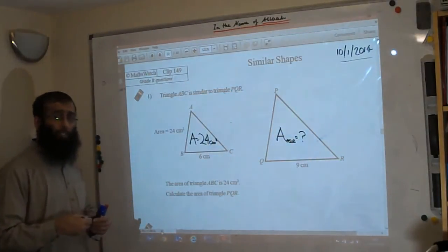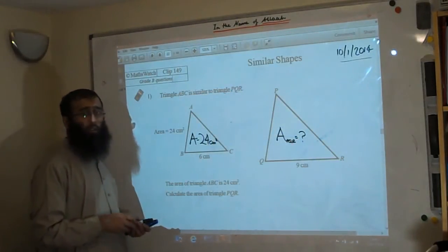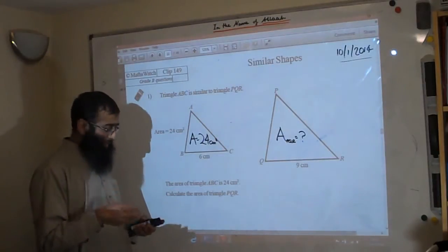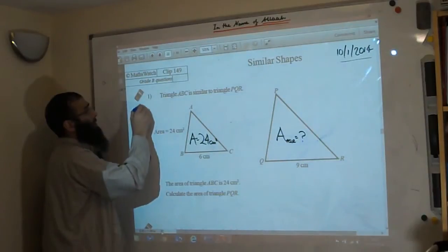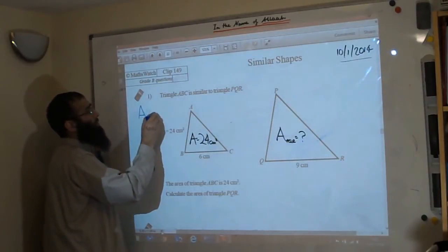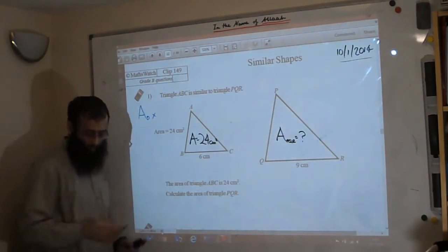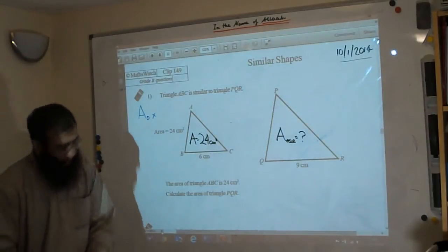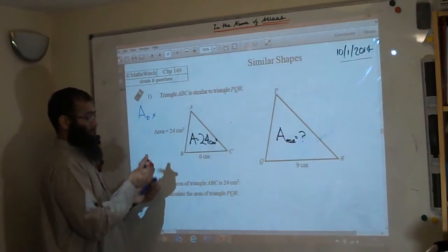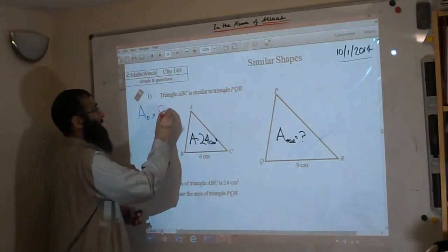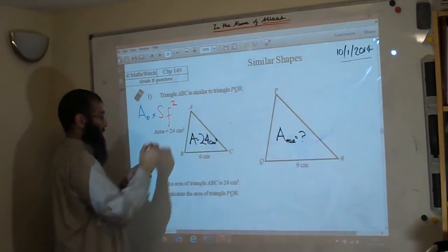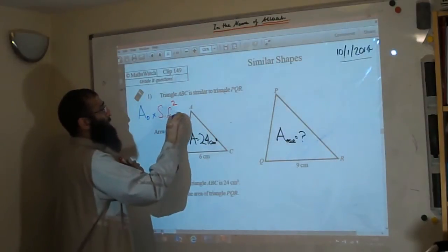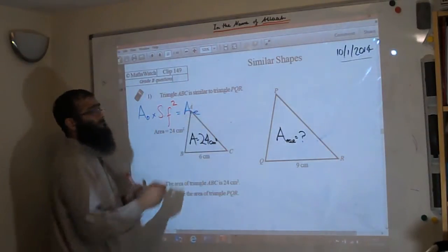Now as mentioned in the previous video, we have certain formulas and rules that we need to follow. So let's go through those rules again. We have the area of the original multiply by the scale factor squared will be equal to the area of the enlarged.